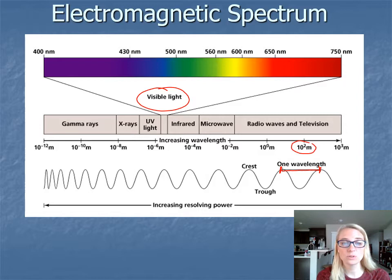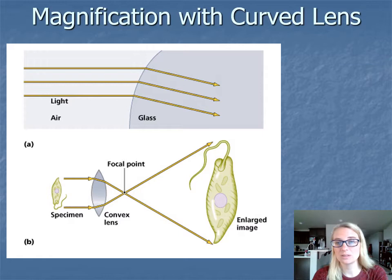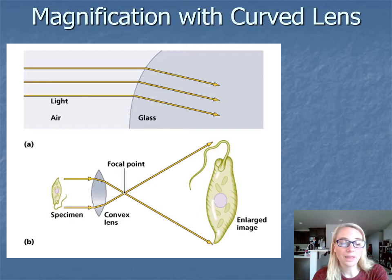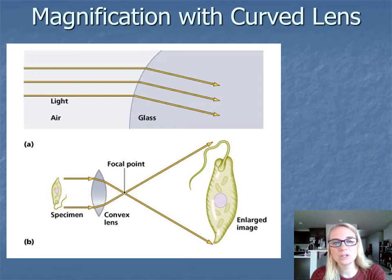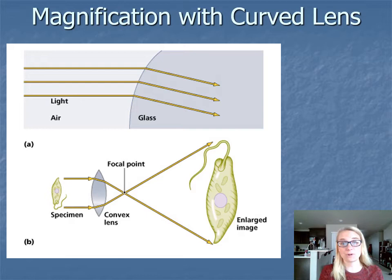We'll be looking at microscopes that utilize the visible spectrum in light microscopes, and possibly some in the UV spectrum. Microscopes take a specimen and make it look bigger than it normally is — similar to how a telescope makes distant objects larger. Most microscopes are made with curved glass lenses. Light travels in a straight line until it hits something that makes it refract, meaning bend. In air, a light wave goes in one direction, then hits glass — which is denser — and curves.